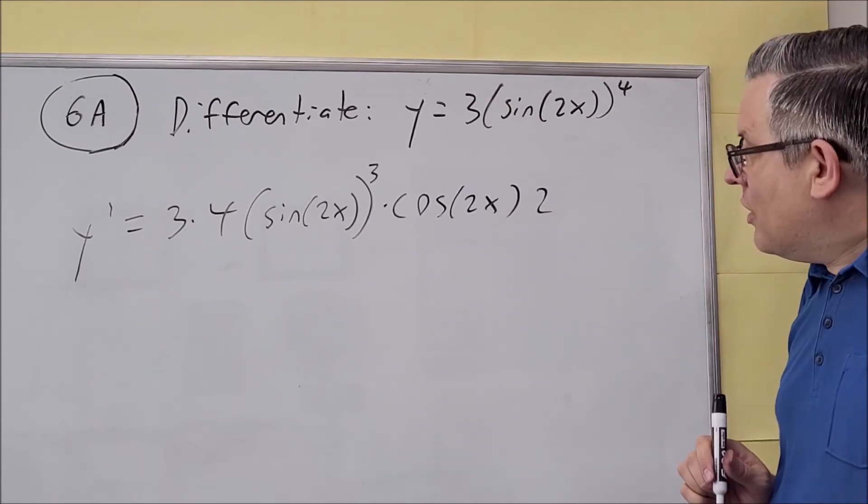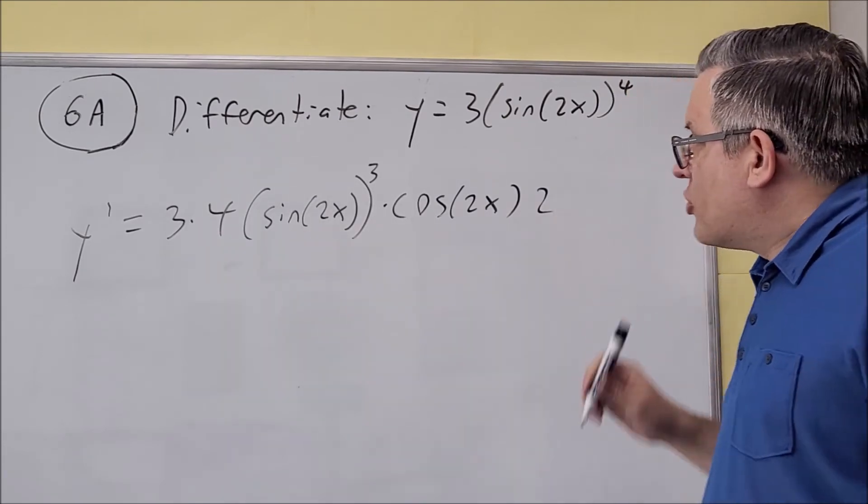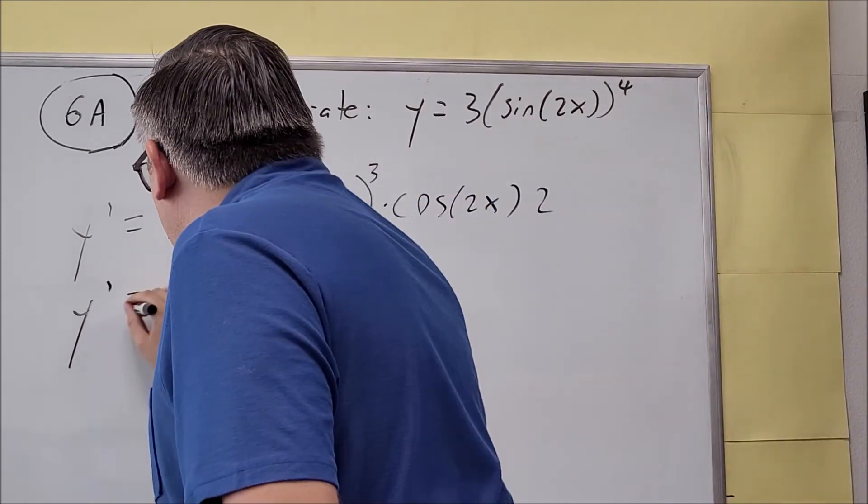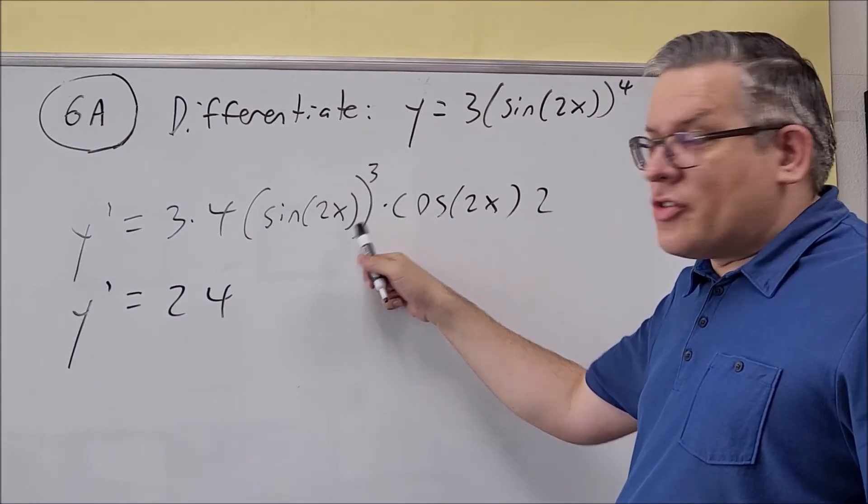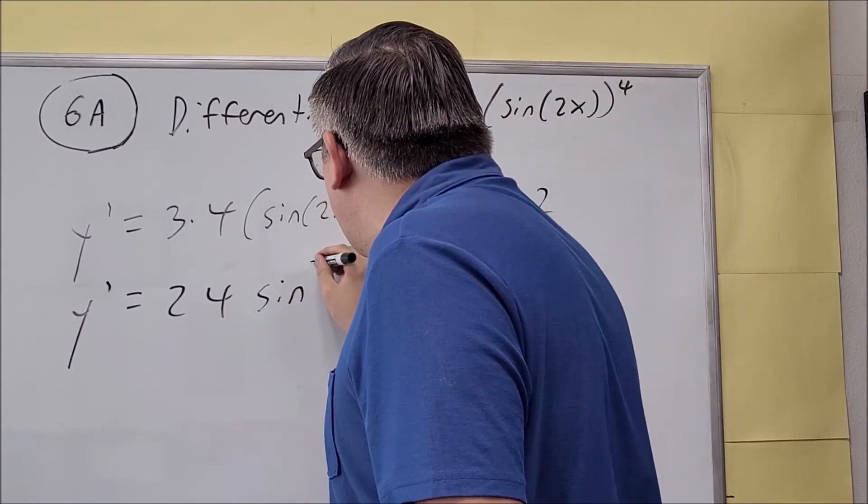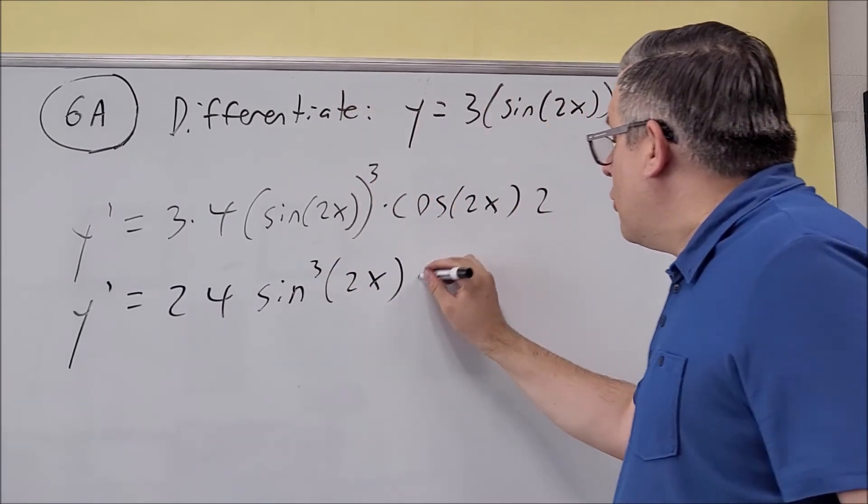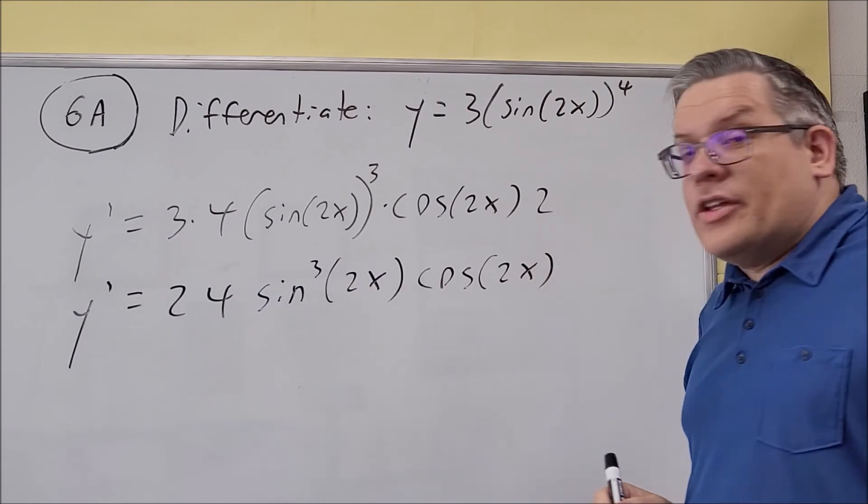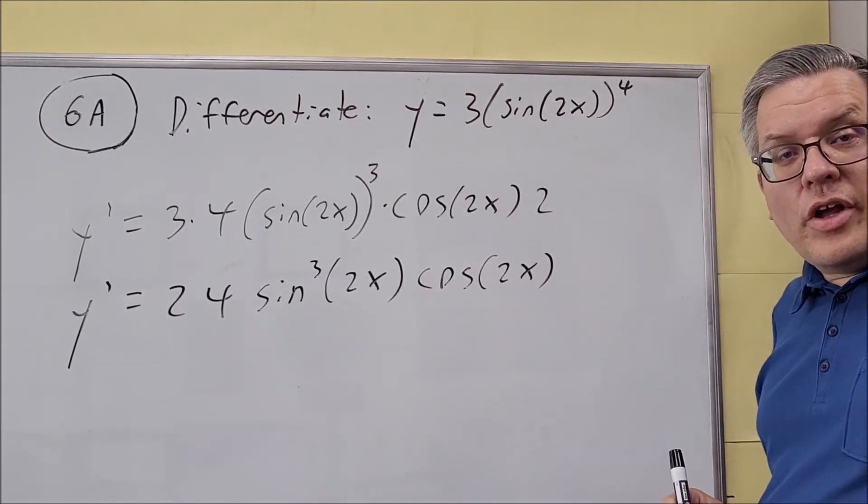So now we're going to put all this together. It doesn't matter the order in which you write this, but we have 12 times 2. That's going to be 24. And then if you want to leave the sign like this, that's fine. Or if you like to write it like this, that's also acceptable. And then we put cosine 2x on the end like that. And this right here, that would just end up being your final answer.